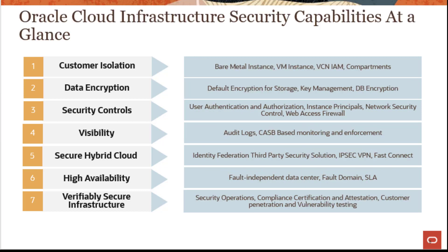So what security capabilities does Oracle provide for these seven pillars? For customer isolation, bare metal instances and VM instances are all isolated from each other. We have VCNs to provide network-level isolation, IAM policies to provide secure control, and compartments to provide isolation within a customer account. So if a customer has multiple departments, compartments can be used to provide isolation for resources across those different departments.